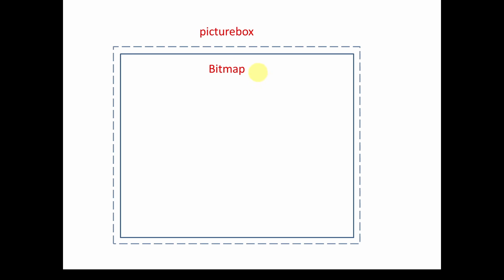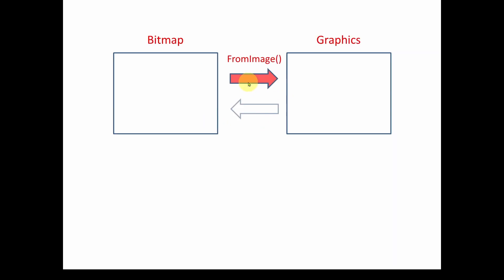Aside from bitmaps, Windows Forms uses another class to actually do the drawing for the bitmap. So we've got a bitmap, and what we're going to do is use a FromImage method and generate what's called a Graphics class object from that image. We take the parameters of that bitmap and create a Graphics class object, and that's what we're going to use to do the drawing of the circles, text, lines, and so on.